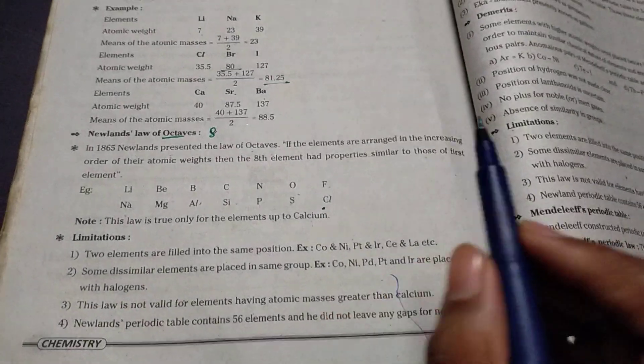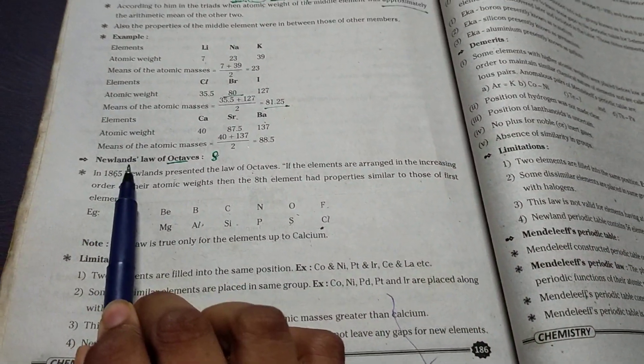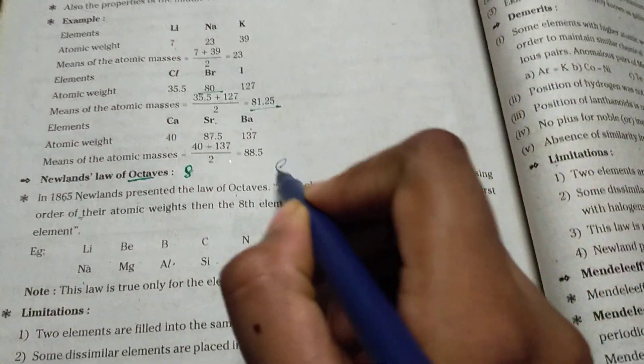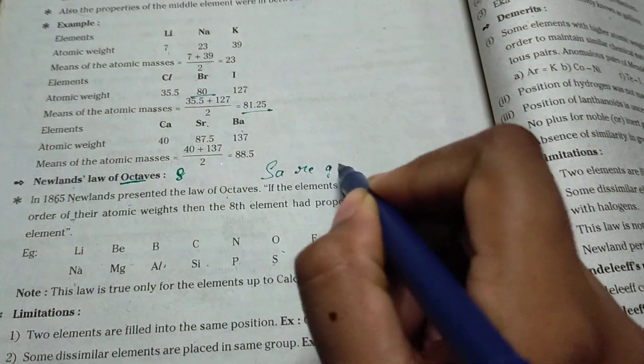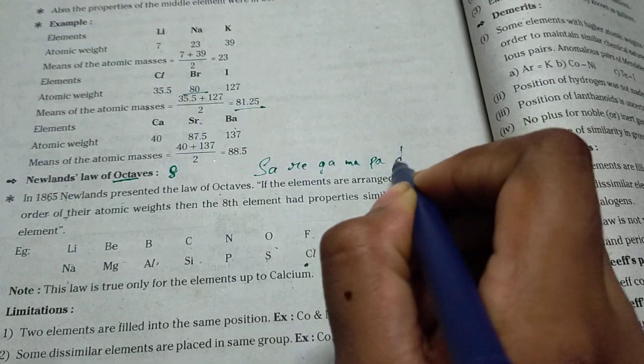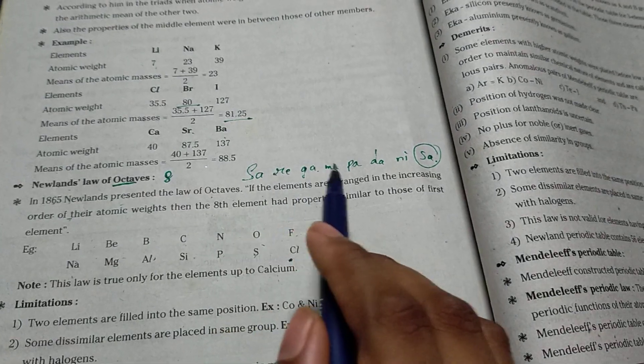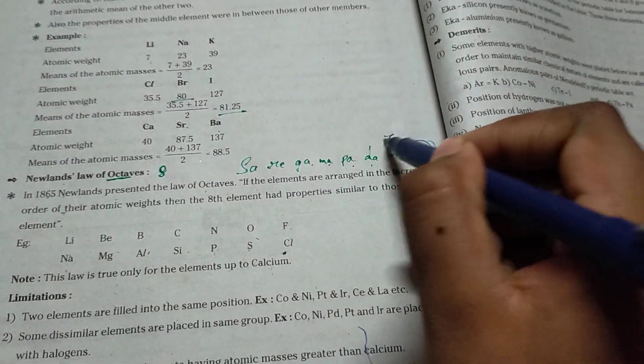Up to calcium, it is correct in Newlands' law of octaves. Here, he followed this like Sa Re Ga Ma Pa Dha Ni Sa. You see, one, two, three, four, five, six, seven.